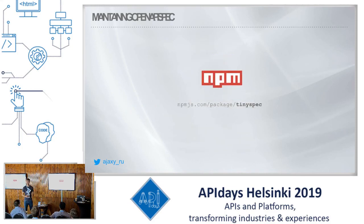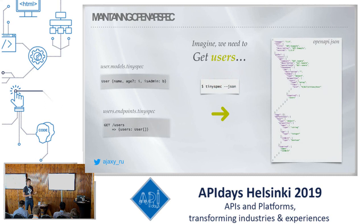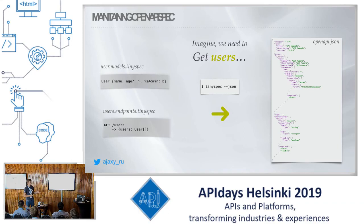TinySpec is an NPM module. You download it from NPM, install it in your system, and get a command-line interface. It only has one command — 'tinyspec' — which will generate a real JSON file. With just three lines of code, you get a full API JSON file which has 57 lines of code. It's impressive how much redundant information it removes while preserving all the useful information.